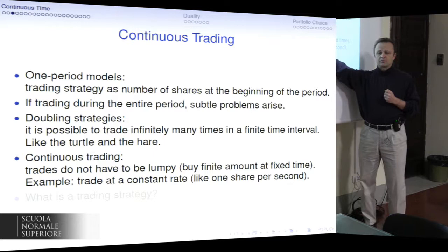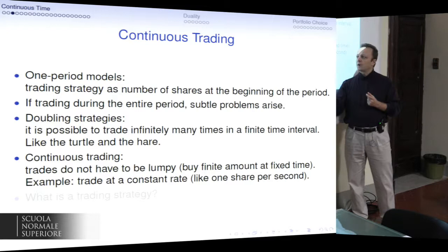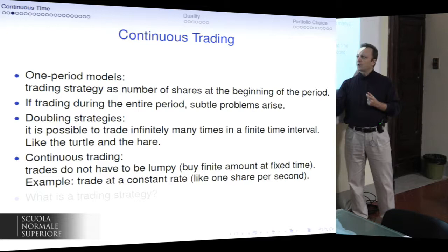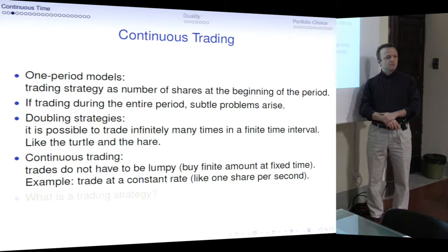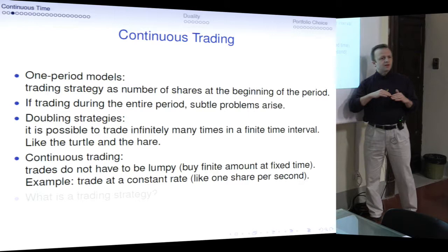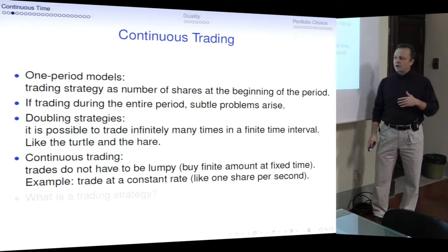Another issue with continuous trading is that it is not really clear what a trading strategy is, because you do not have to trade in finite amounts. You do not have to buy a certain number of shares at a certain time. You can trade in a number of ways — at a constant rate, meaning the number of shares could be absolutely continuous in time — or you can do even more exotic things, such as having a finite variation strategy which does not have any derivative, giving counter-like behavior. We need to understand what exactly a trading strategy in continuous time is, and I'm going to do this with a minimal amount of technical detail.